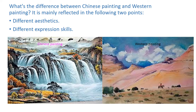It is mainly reflected in the following two points: different aesthetics and different expression skills. Here is a Chinese painting example, and there is a Western painting example.